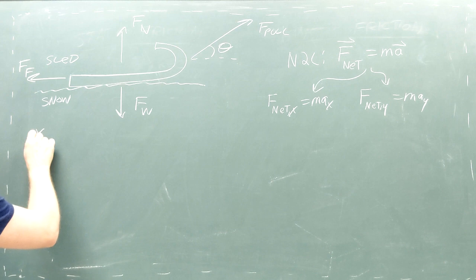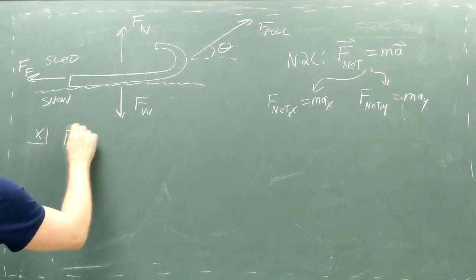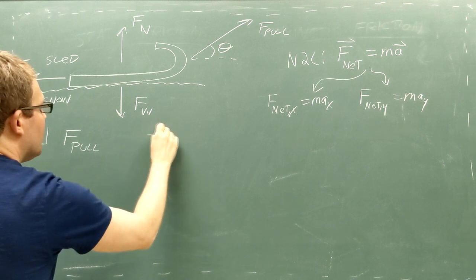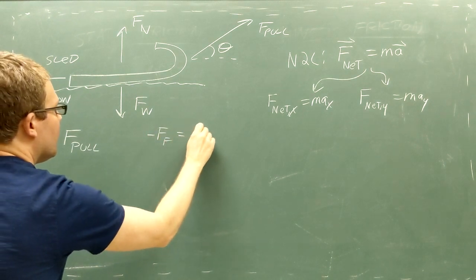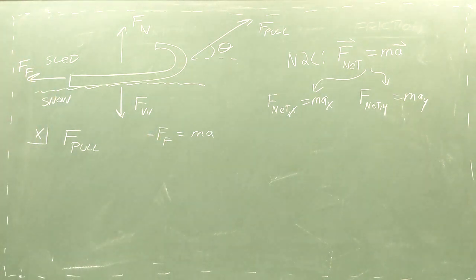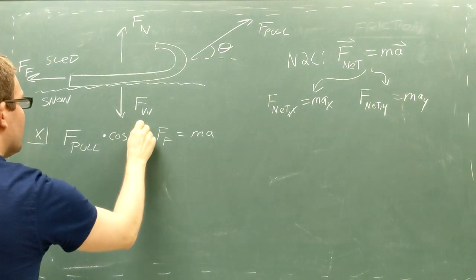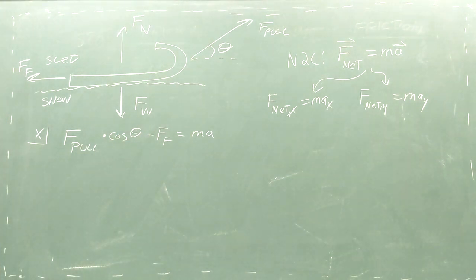In the x direction there are two forces, your pulling force pointing forward and the friction force pointing backward. Since we're only looking at forces in the x direction, we need to include only the x component of your pulling force. To get this x component, we multiply the magnitude of your pulling force by the cosine of the angle that the rope makes with the ground.